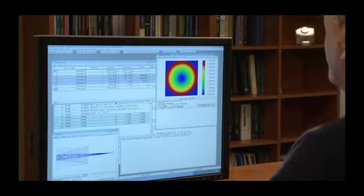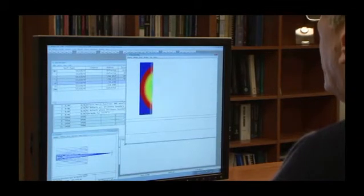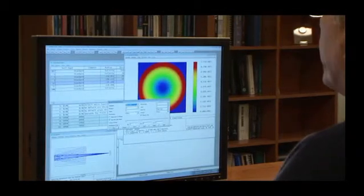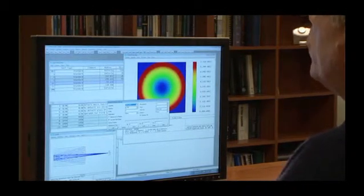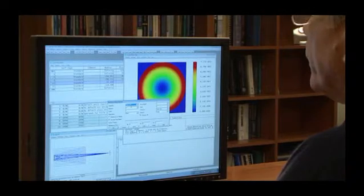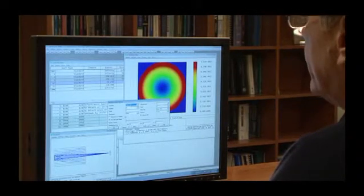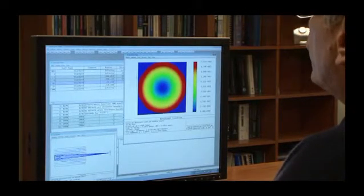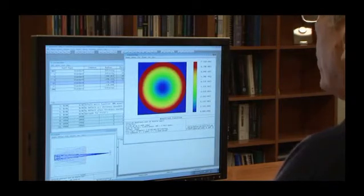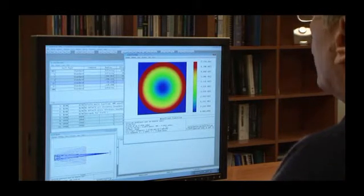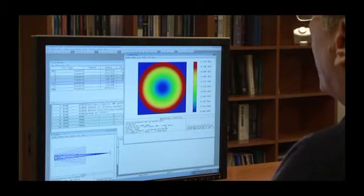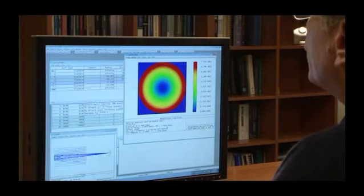If I look at the wave front map here, this wave front map is traced on a sampling of 256 by 256 rays. We're tracing that huge grid of rays through the system and we're computing the RMS of the wave front to be 0.0022 waves.